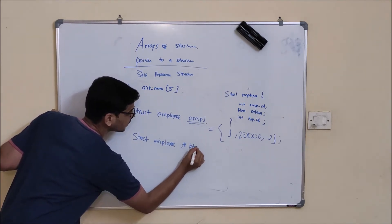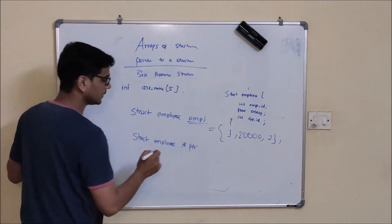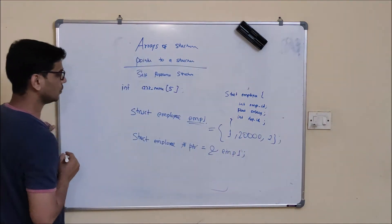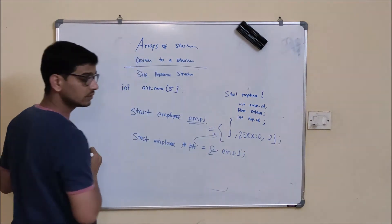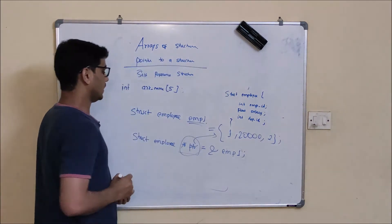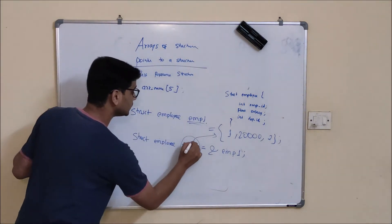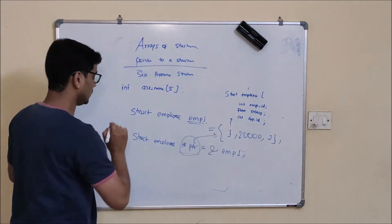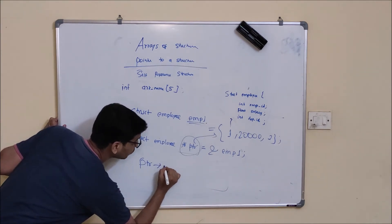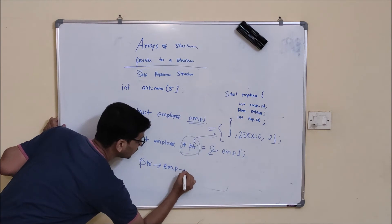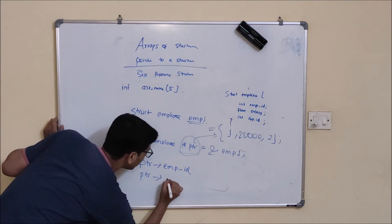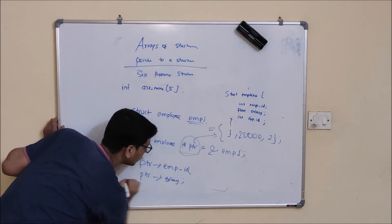We declare a pointer for the employee structure and assign it the address of emp1. Now this pointer points to that structure. To retrieve data, we use: ptr->empId to print the employee ID, and ptr->salary to print the salary.